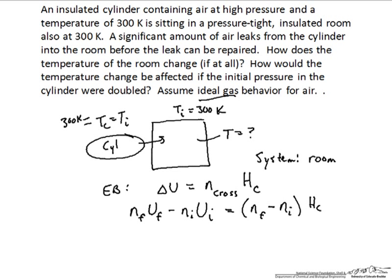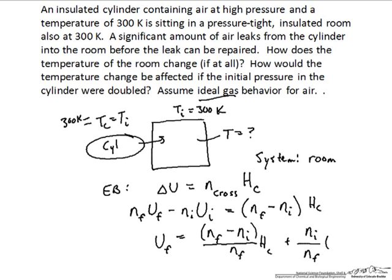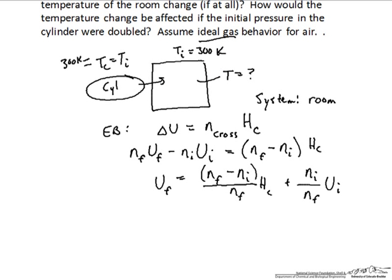We have the enthalpy of the stream coming in from the cylinder. We can rearrange this expression using simple algebra to solve for u_f, our final internal energy per mole of gas in the room. That equals (n_final minus n_initial) over n_final, times the enthalpy of the cylinder, plus n_initial over n_final times the initial internal energy of the gas in the room.